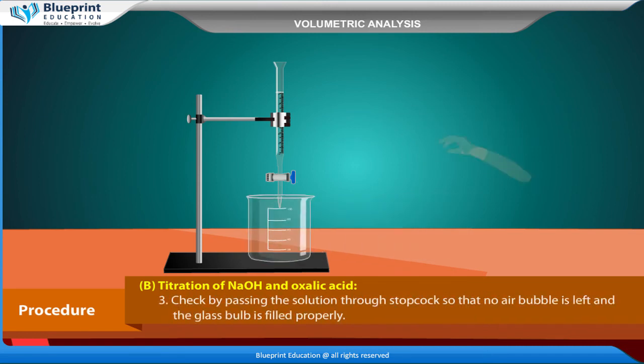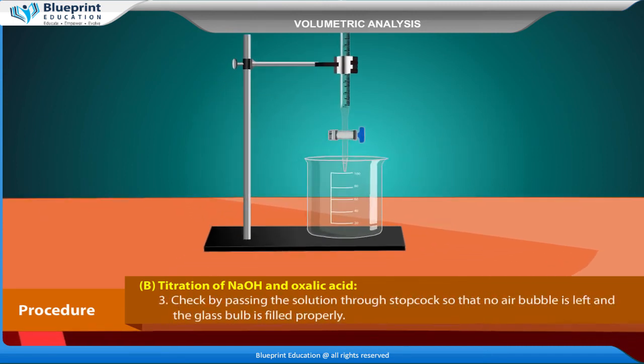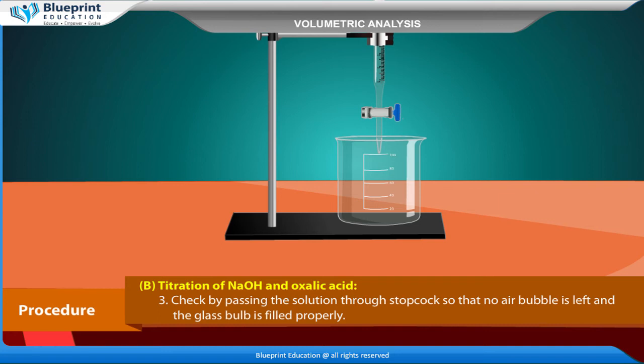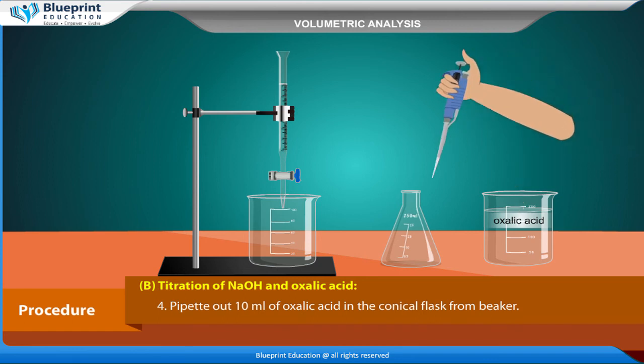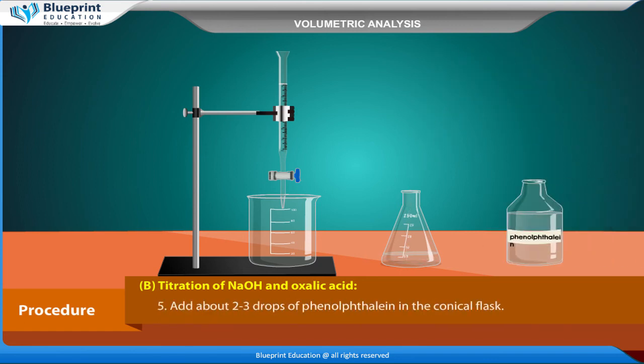Check by passing the solution through stop cock so that no air bubble is left and the glass bulb is filled properly. Pipette out 10 ml of oxalic acid in the conical flask from beaker. Add about 2-3 drops of phenolphthalein in the conical flask.